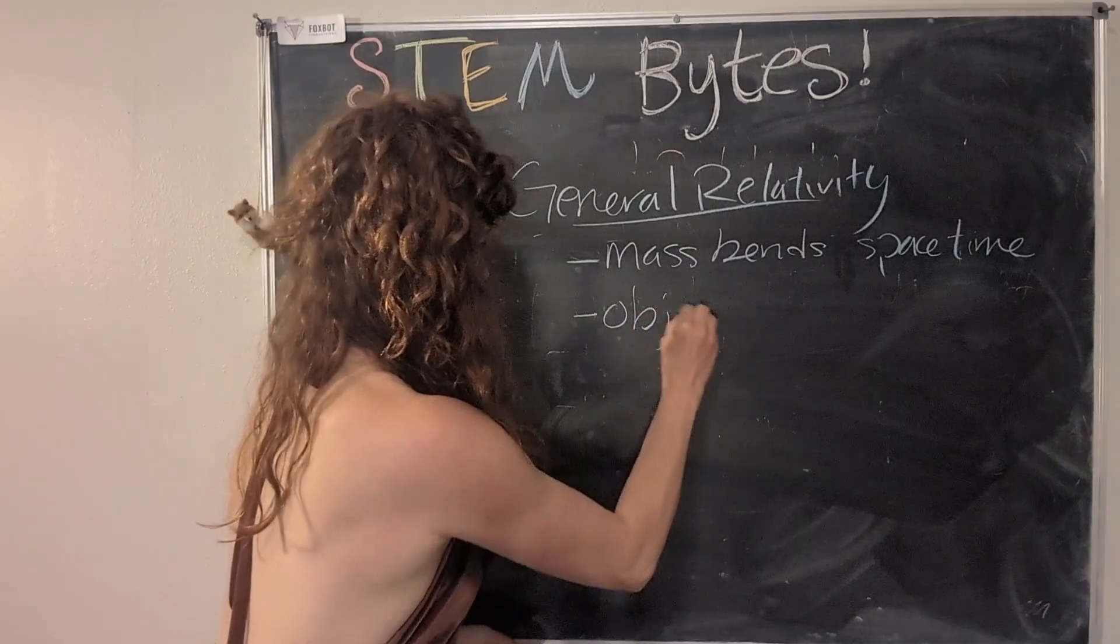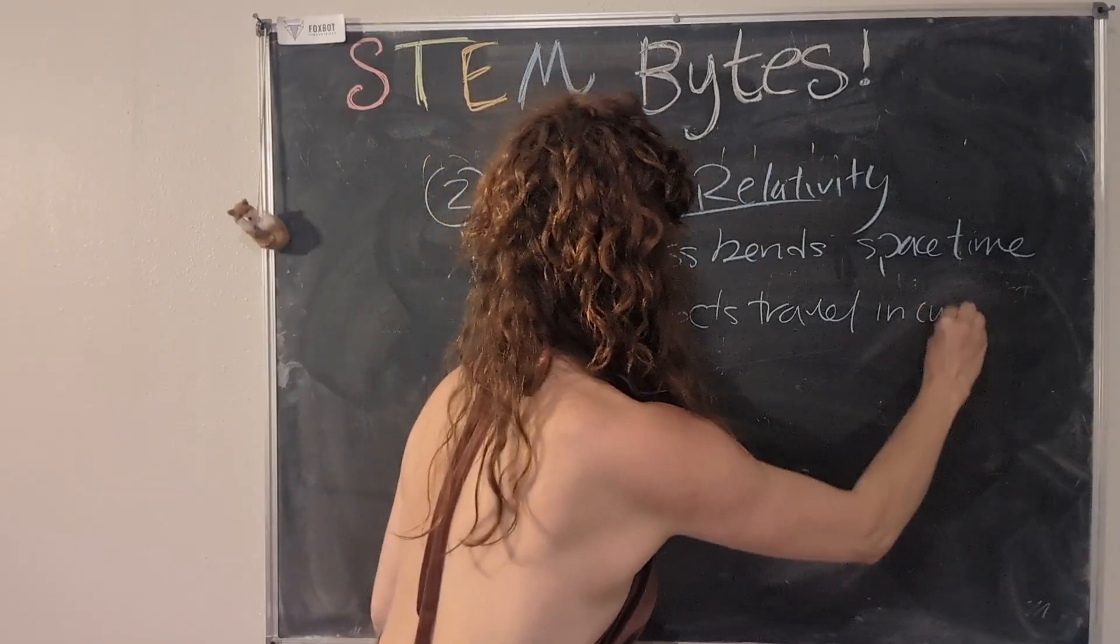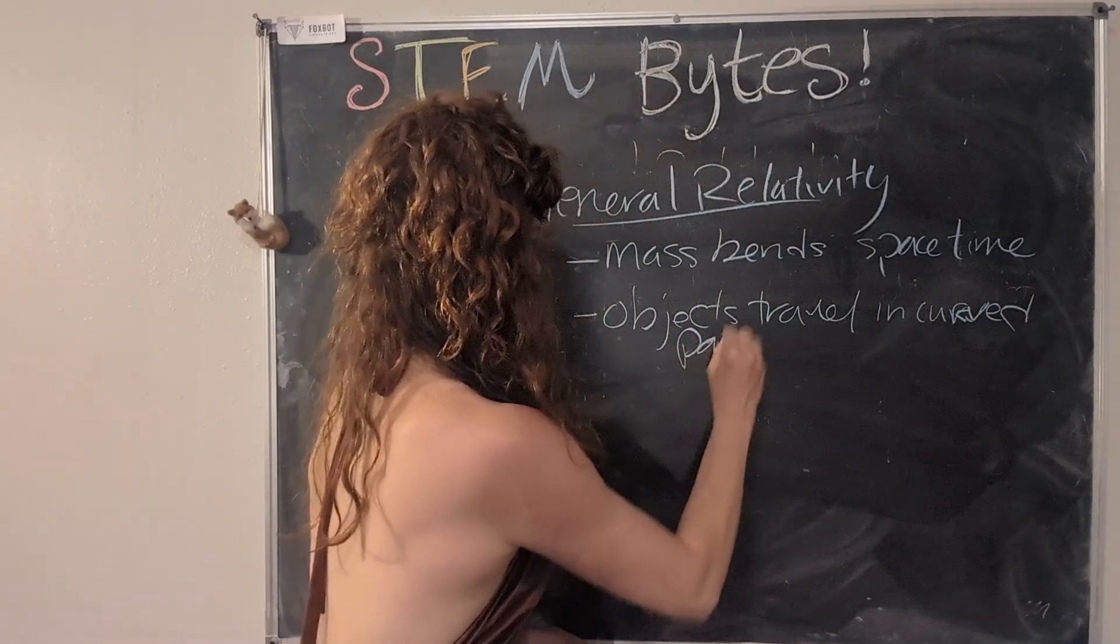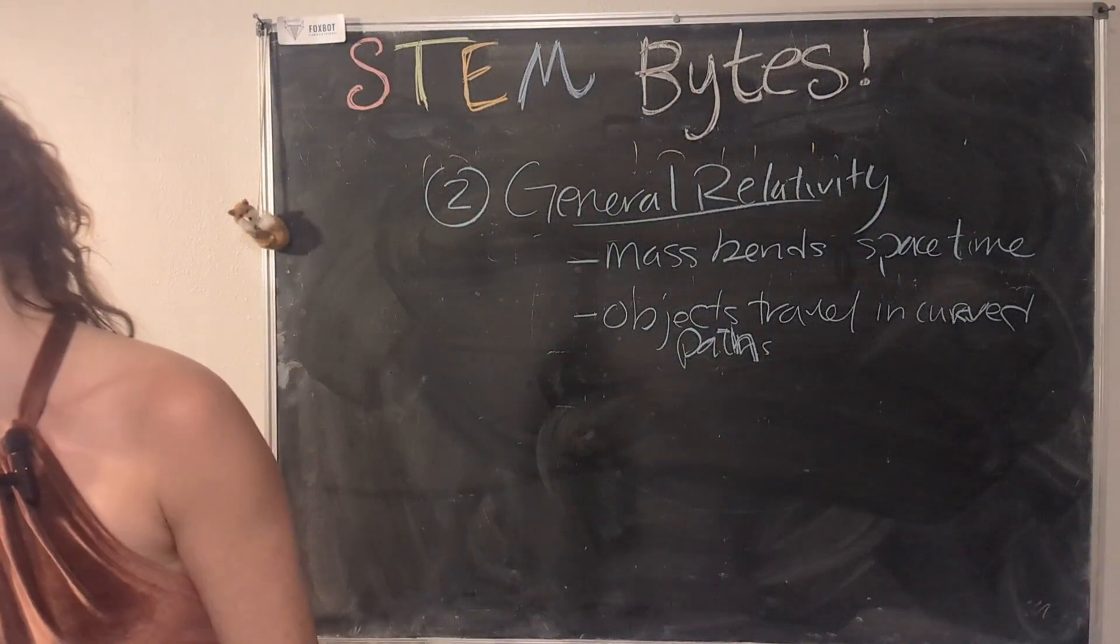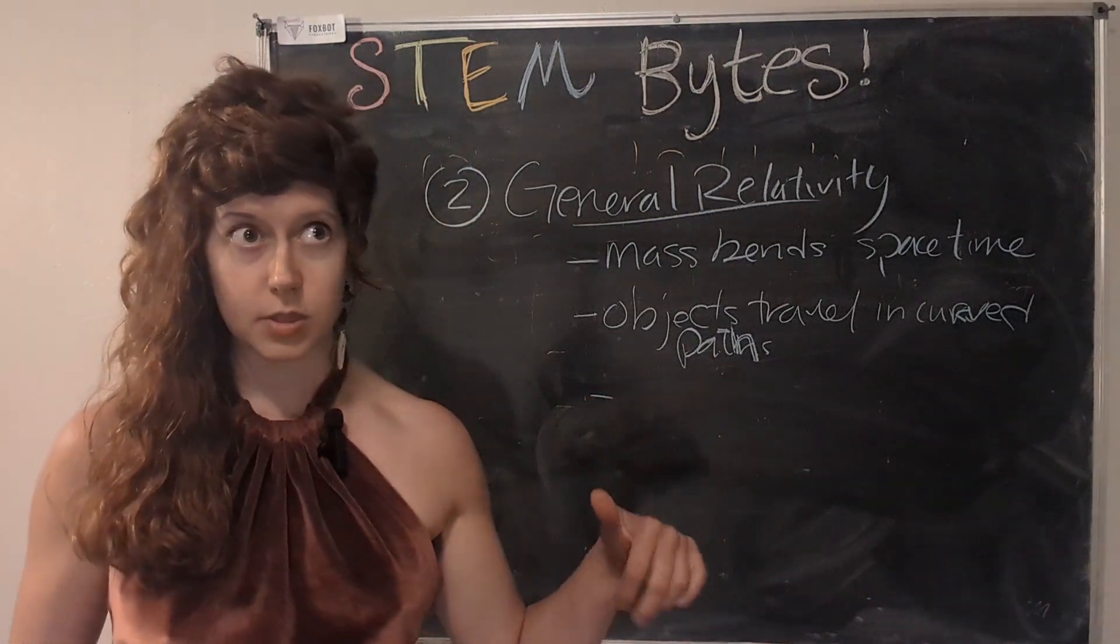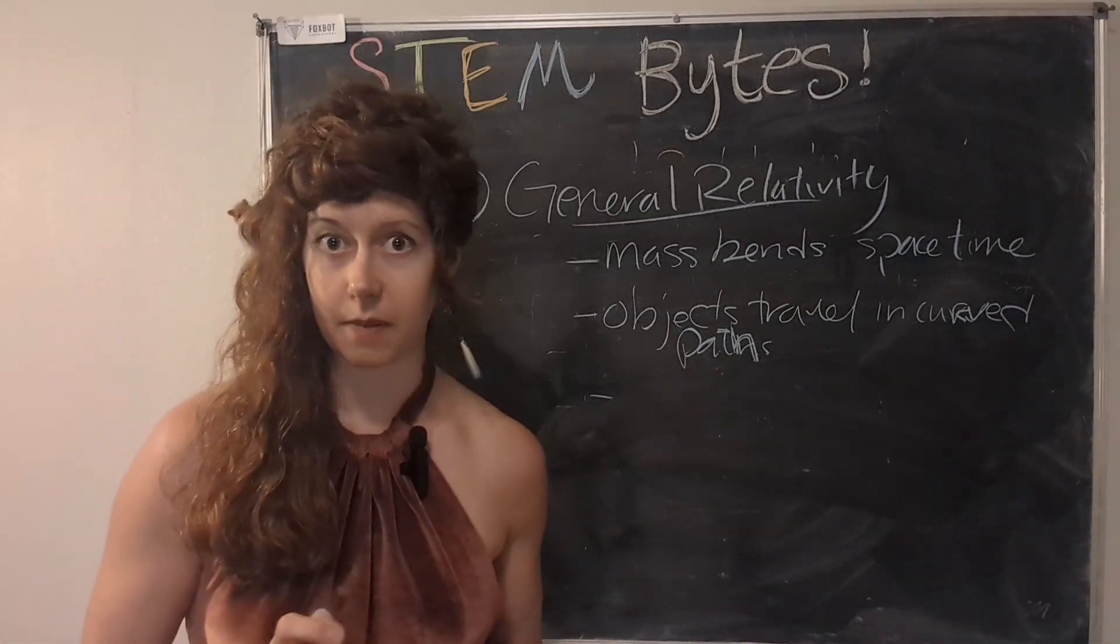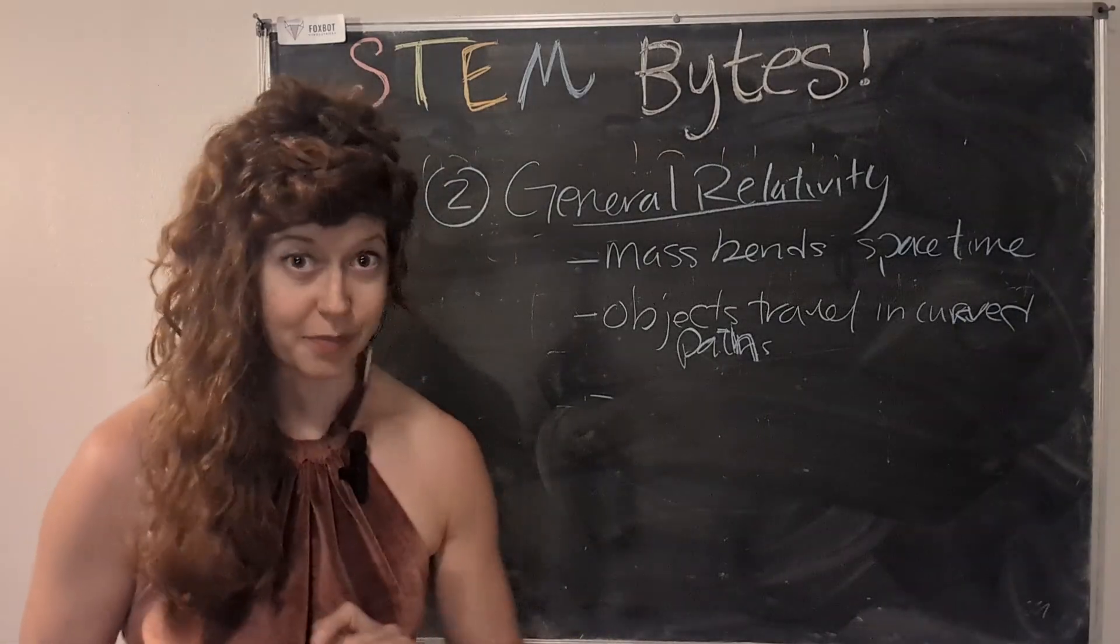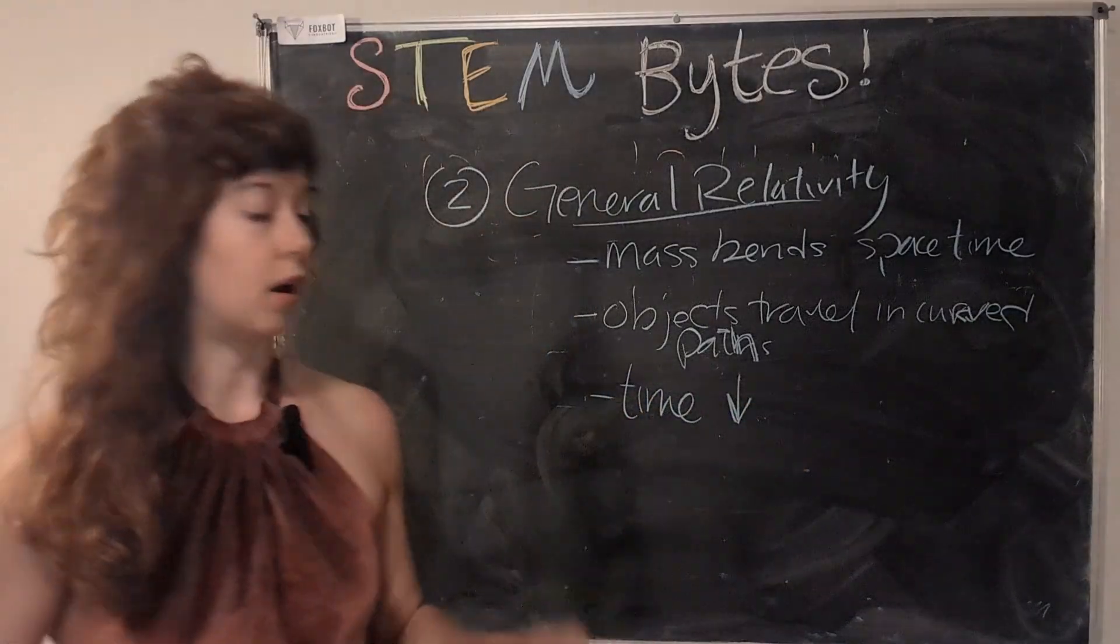And so objects in space have these curved trajectories. So objects travel in curved paths. So cool. And this is also where special relativity and general relativity overlap a little bit because a lot of it deals with the weirdness of space-time and the weirdness of speed and acceleration.